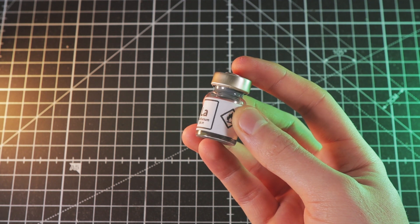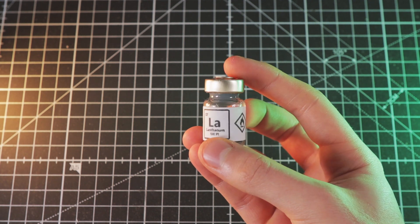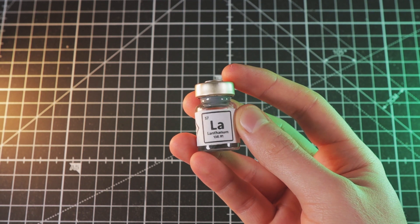Today, lanthanum is most commonly used in production of tanks and electrodes, scintillators, and in the past it was added to some vintage lenses.